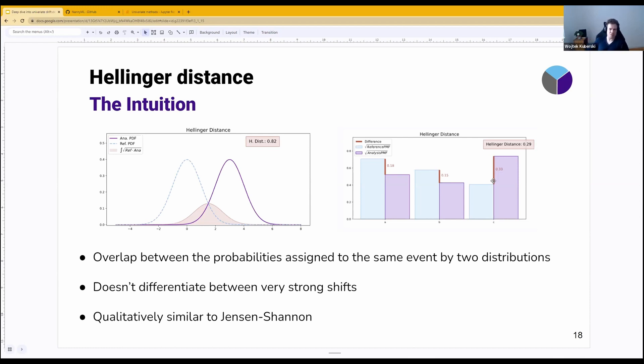As you probably already see, it's qualitatively similar to Jensen-Shannon, whereas Jensen-Shannon is slightly more robust to changes.